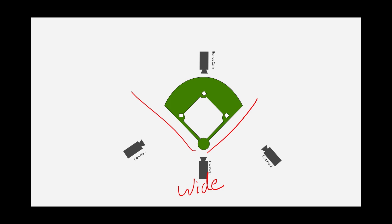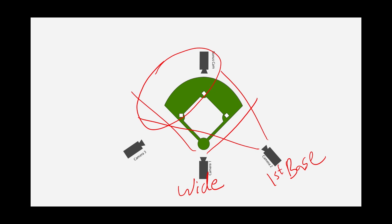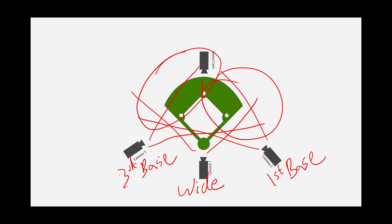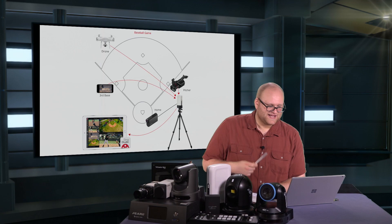Camera one right here gets as much information as possible — that is your wide. Camera two, stationed behind first base, catches that side of the field and focuses over here. Camera three, stationed behind third base, captures all of that, focusing over here. And then your bonus cam is just another angle to capture perhaps a reverse. That's very subjective — it depends on where you're going and so on and so forth, but it will add production value.